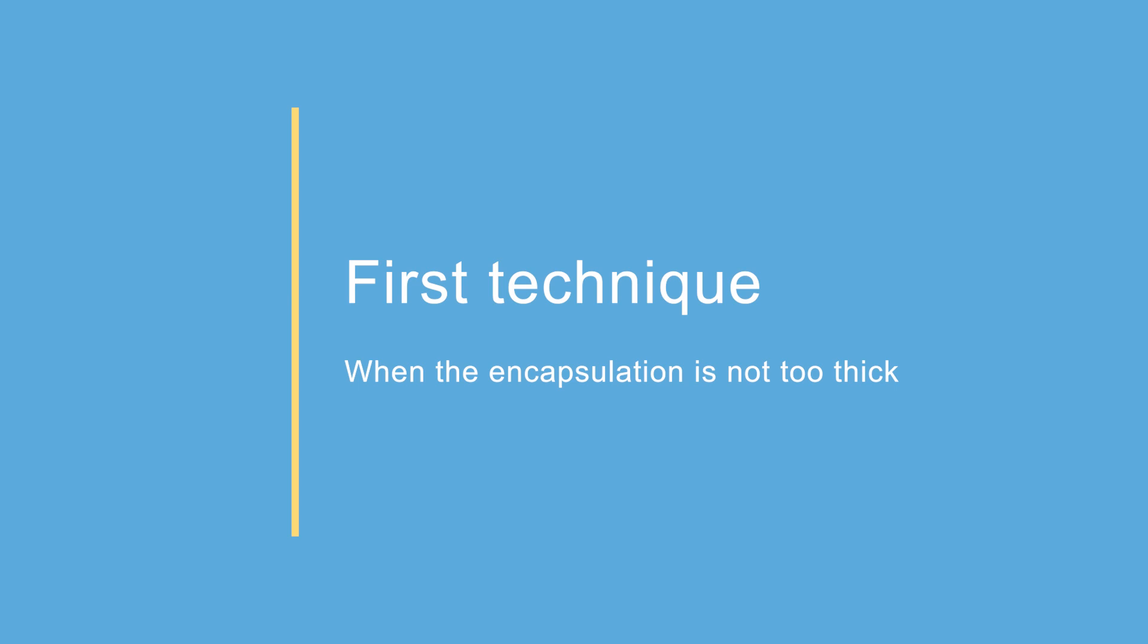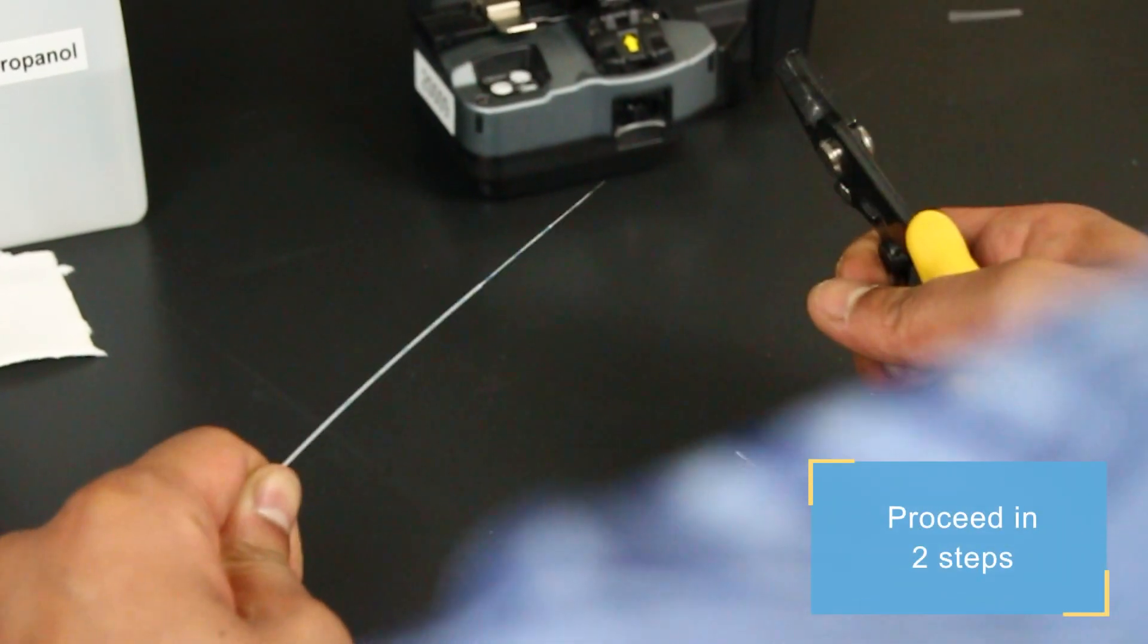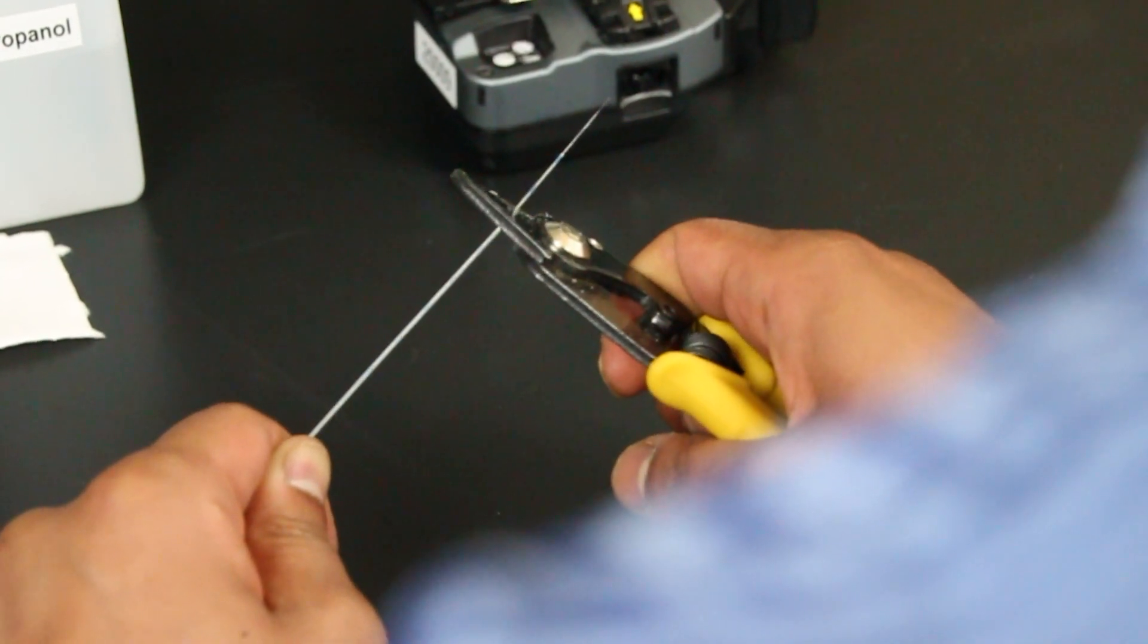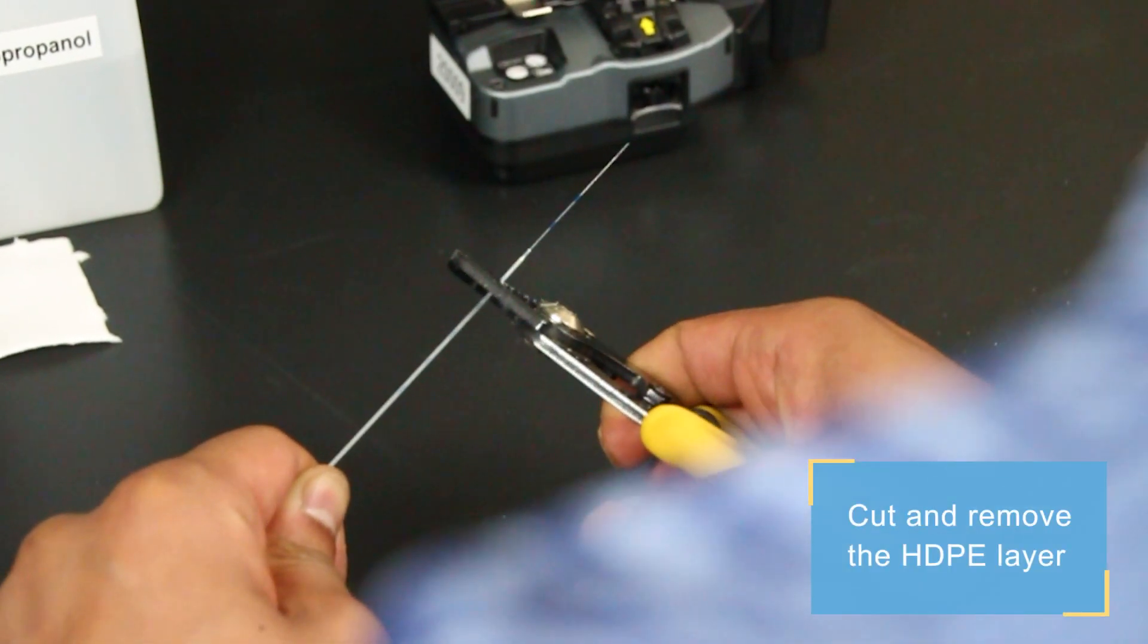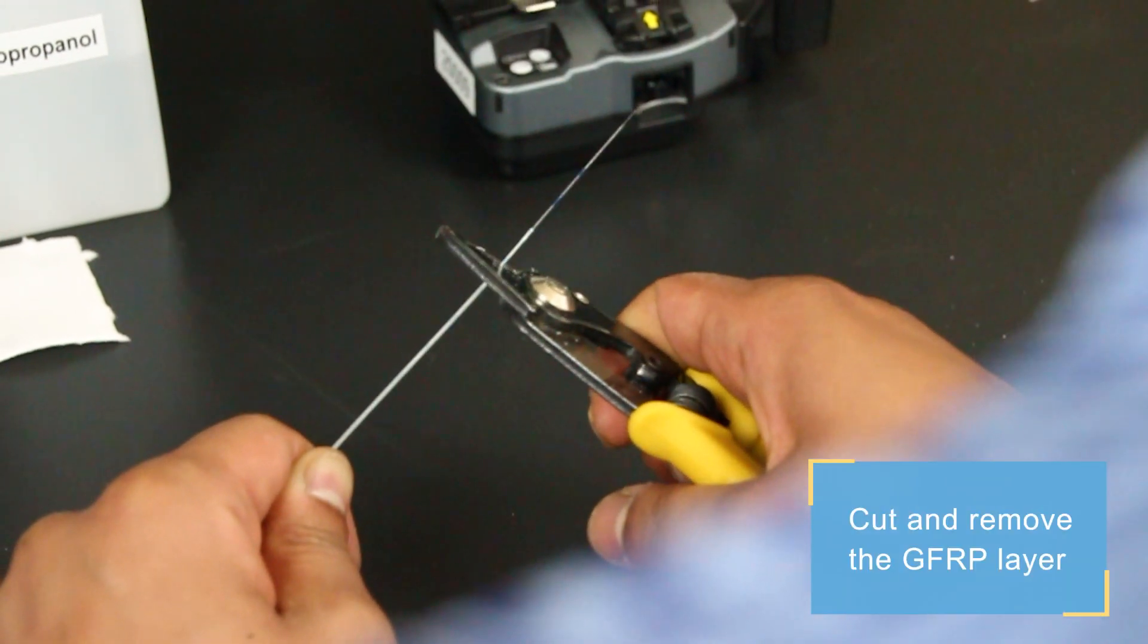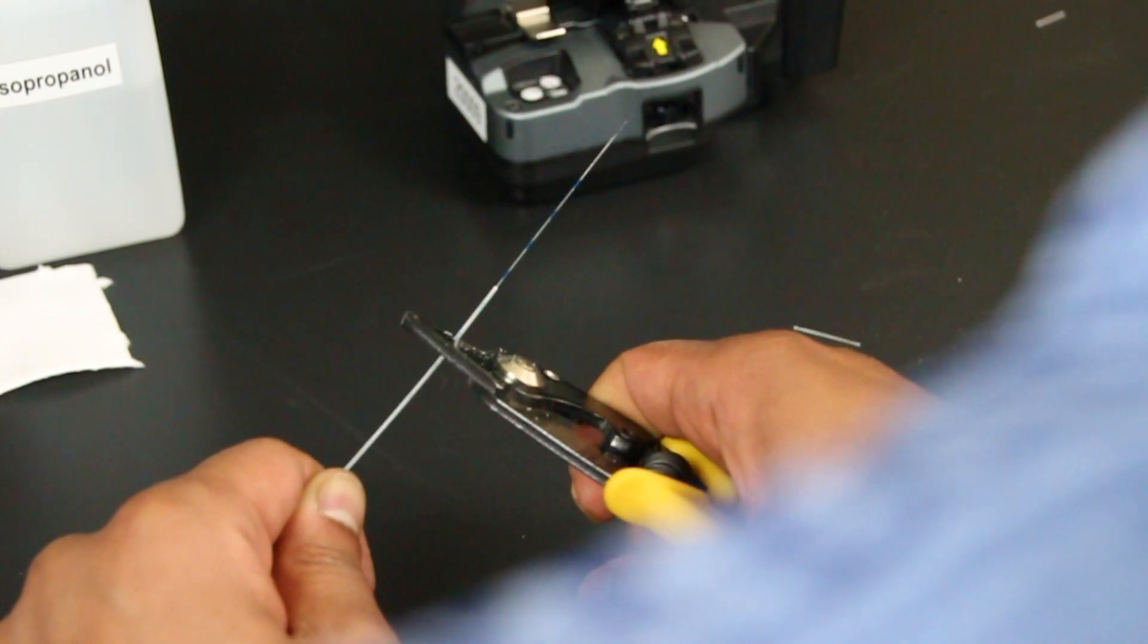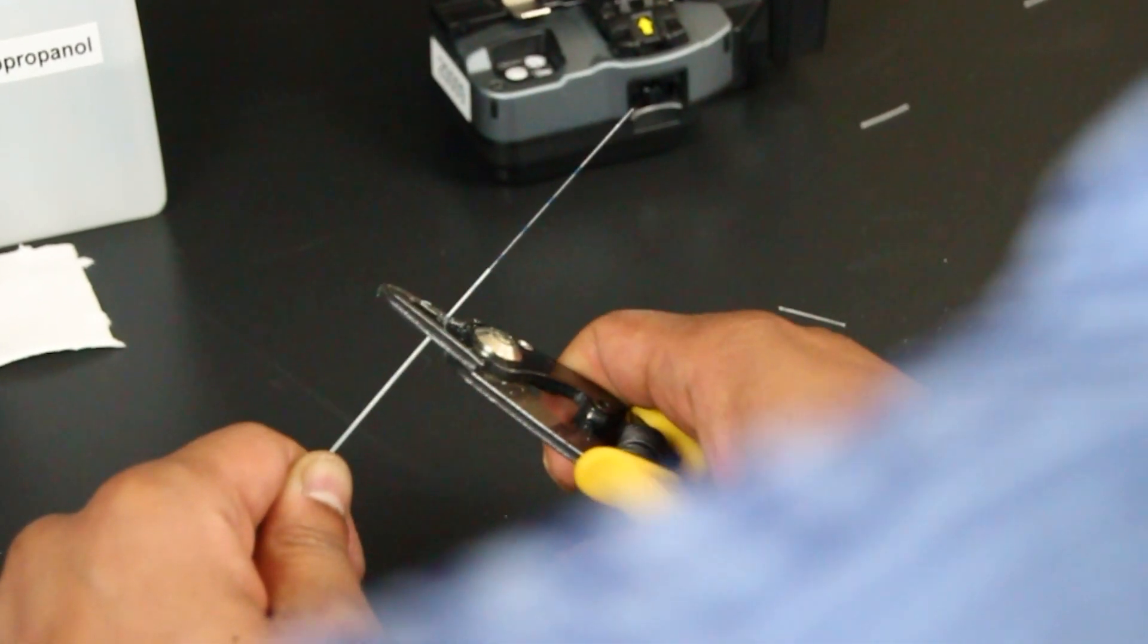In the first technique, we use the stripper following two steps. First, cut and remove the HDPE layer. Then, cut and remove the GFRP layer. This technique is good to use when the diameter of the encapsulation is not higher than 0.5 mm.